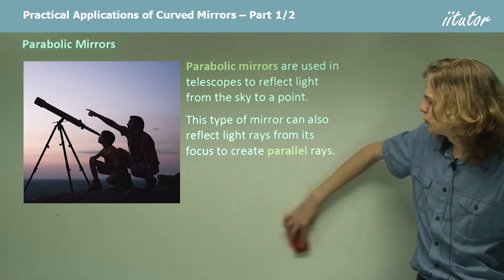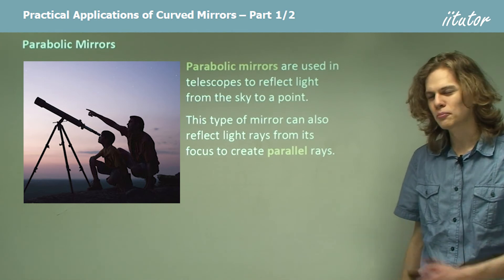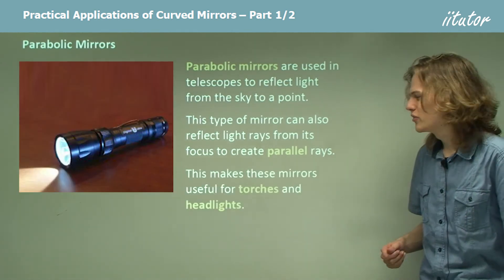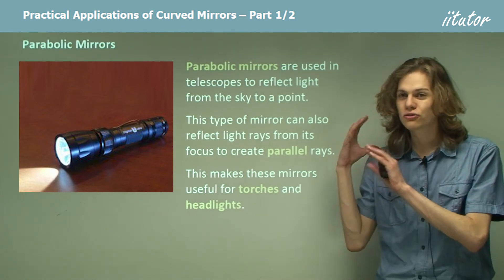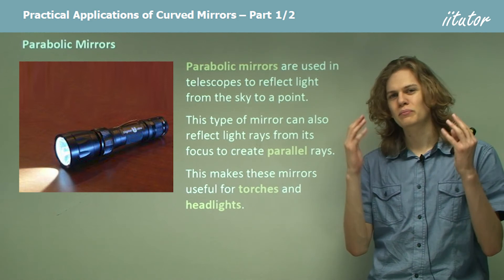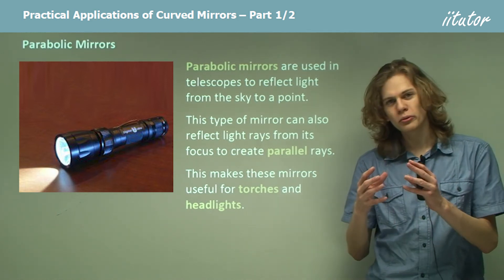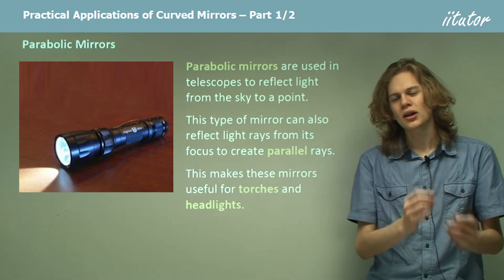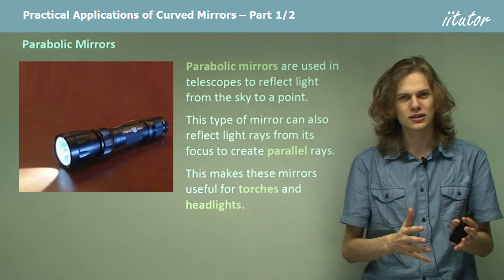So why would it be useful to create lots of parallel lines of light? Well, in a torch or in the headlight on a car, we need to project light forward a long distance, so we want it to be going as parallel as we can get it. This means that we put a light bulb at the focus of a parabolic mirror and the parabolic mirror will focus the light into straight lines.